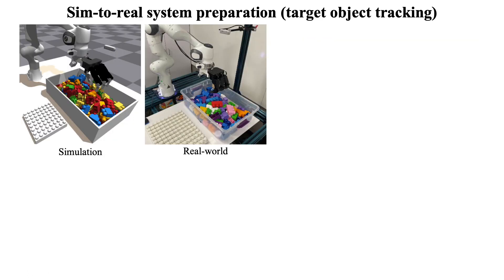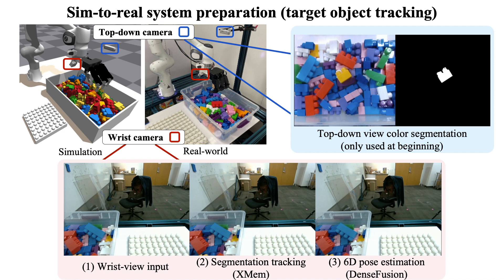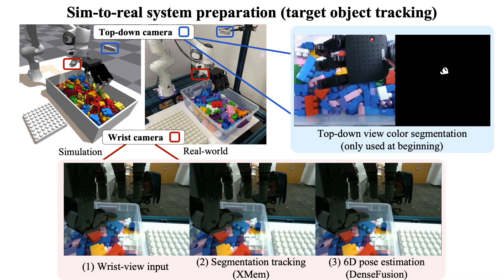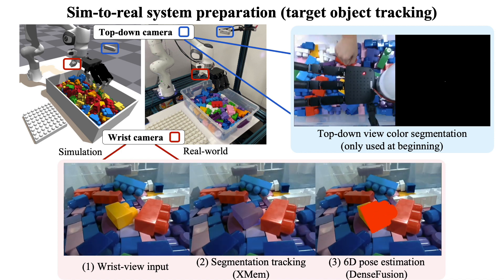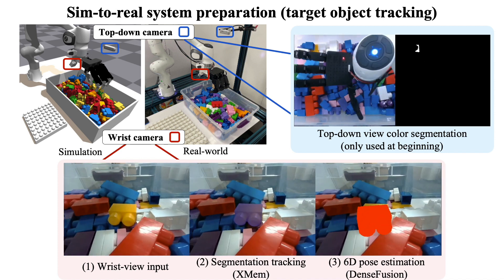To transform the learned policy to the real world, we developed an object tracking system consisting of a top-down camera and a wrist RGBD camera mounted on the robot. In the beginning, the top-down camera localizes the target block and guides the end effector towards it.